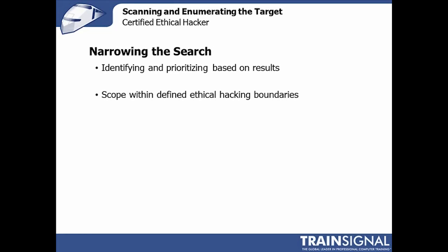Once we've got all of this information built up — our catalog, our data, our nefarious network map — we're going to use it all to identify and prioritize targets based on those results. Something important I want to remind you of: when we're doing ethical hacking examinations, we want to stay within the boundaries that have been defined. If we find five domain controllers in five different domains but our scope constrains us to one domain, remember to stay within those documented boundaries.